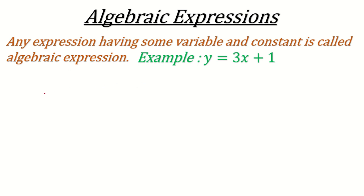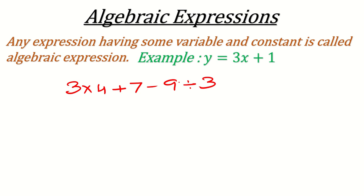If an expression has only real numbers — for example, 3 × 4 + 7 − 9 ÷ 3 — and no variable, then it is called a Numerical Expression, not an Algebraic Expression.